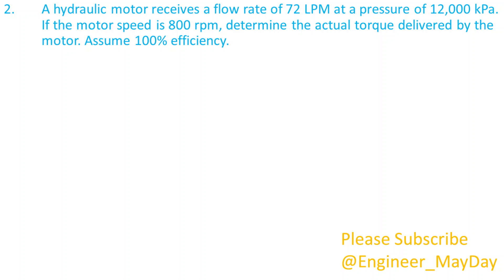Here is a second question. A hydraulic motor receives a flow rate of 72 liters per minute at a pressure of 12,000 kilopascals. If the motor speed is 800 revolutions per minute, determine the actual torque delivered by the motor. Assume 100% efficiency.